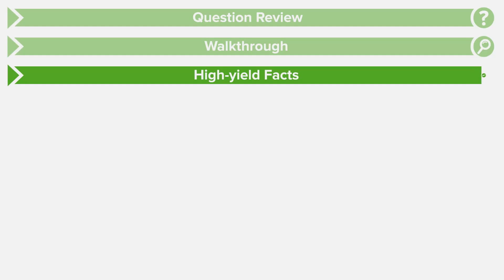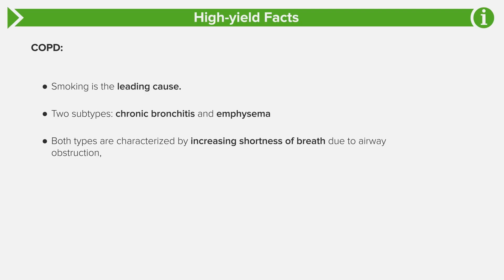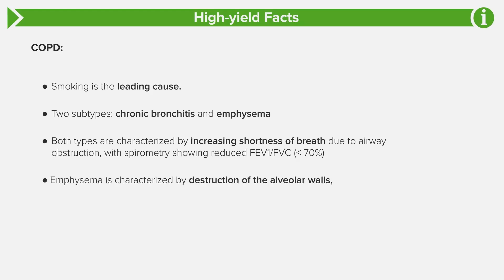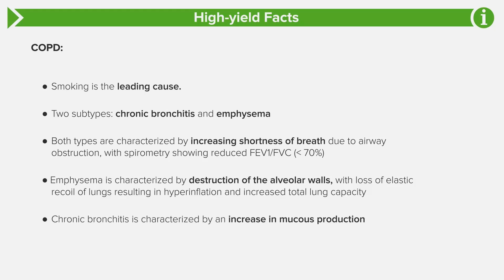Now let's review our high-yield facts regarding COPD. The leading cause of COPD is smoking. COPD has two subtypes — chronic bronchitis and emphysema — both characterized by increased shortness of breath due to airway obstruction, with spirometry showing a reduced FEV1 to FVC ratio below 70%, which is the lower limit of normal. Emphysema is characterized by destruction of alveolar walls with loss of elastic recoil, resulting in hyperinflation and increased total lung capacity. Chronic bronchitis is characterized by increased mucus production and inflammation resulting in cough, and total lung capacity is also increased.